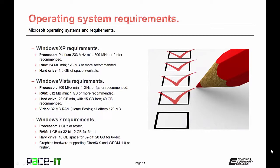The introduction of Windows Vista really ramped up the requirements. On the processor side, the minimum was 800 MHz, with 1 GHz or faster recommended. RAM requirements jumped substantially — the minimum was 512 MB, with 1 GB or more recommended. For the first time, Microsoft required a minimum hard drive size of 20 GB with 15 GB free, though 40 GB was recommended. Microsoft also added video requirements: at least 32 MB of video RAM to run Home Basic, and 128 MB for all other versions.